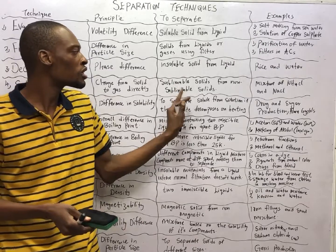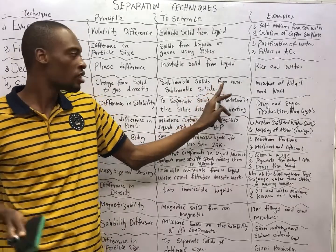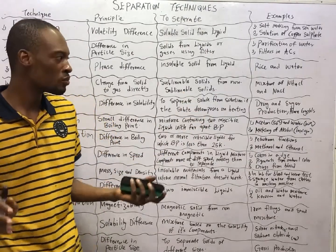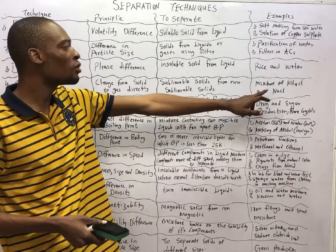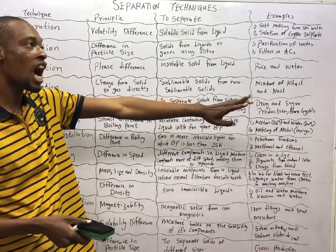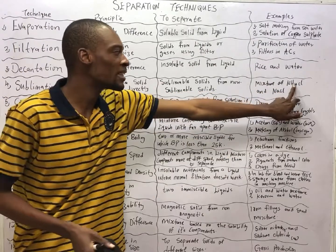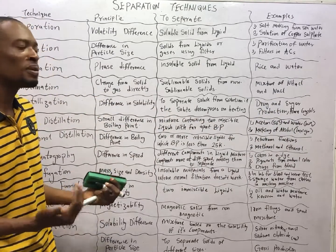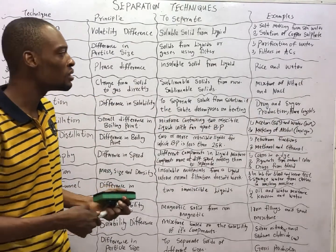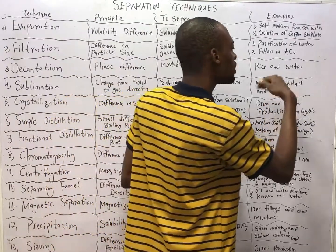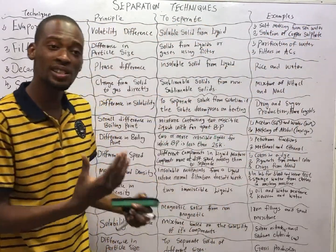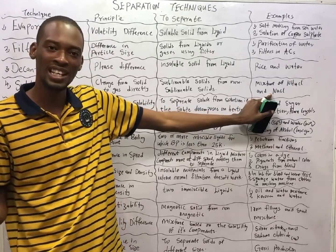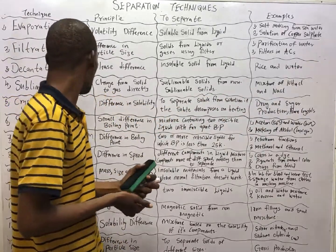Sublimation is used to separate sublimable solids from non-sublimable solids. Apart from camphor, ammonium chloride can also sublime. So to separate ammonium chloride and sodium chloride, you use sublimation. Ammonium chloride will go from the solid state to the gaseous state and sublime away, leaving behind sodium chloride.